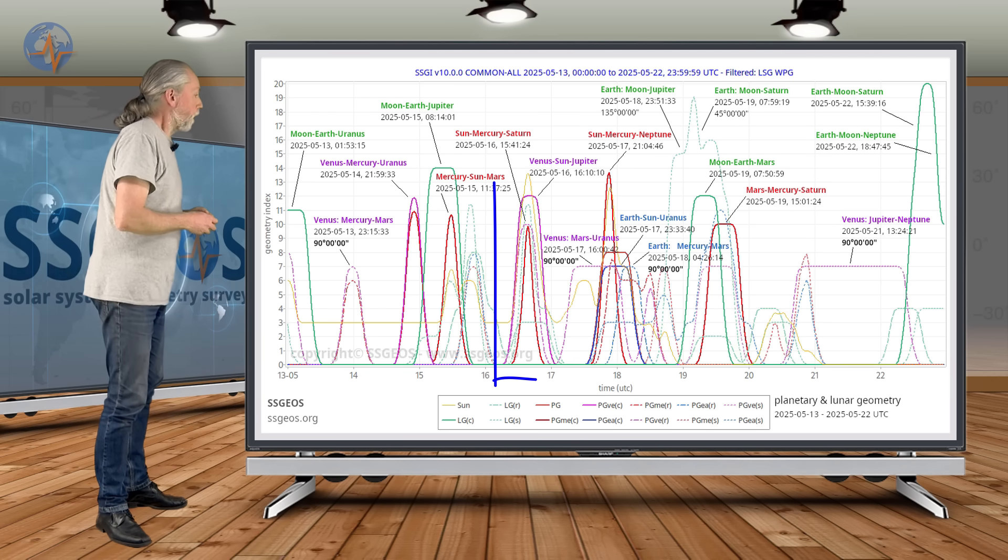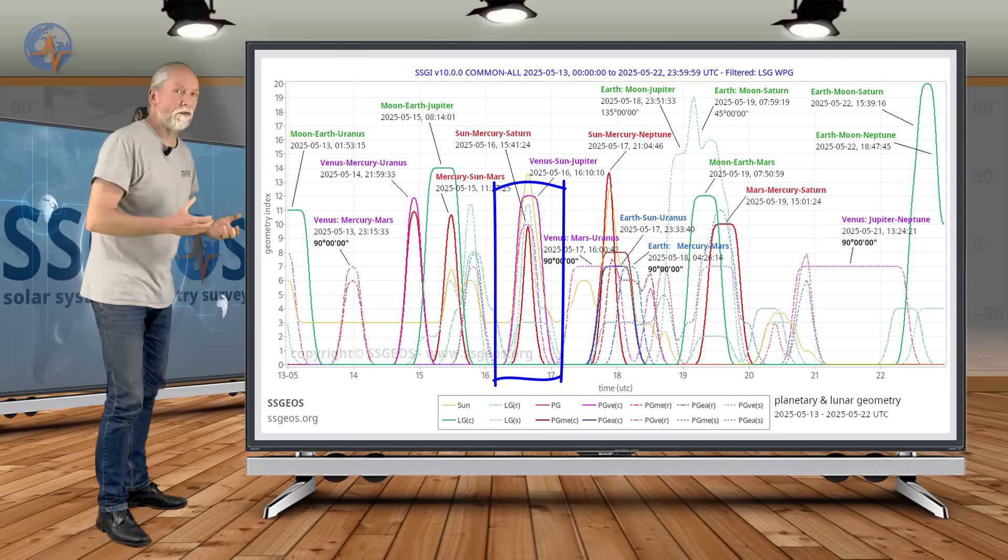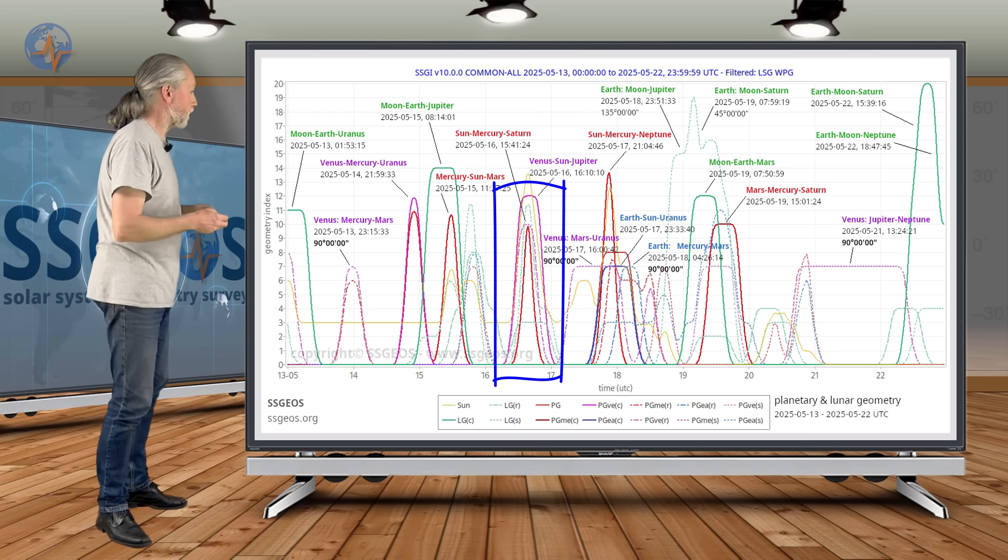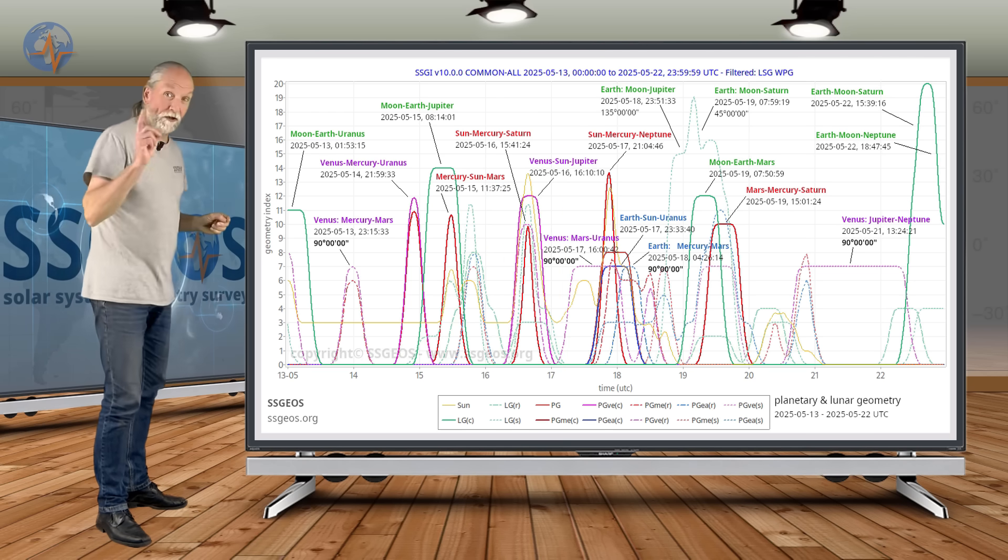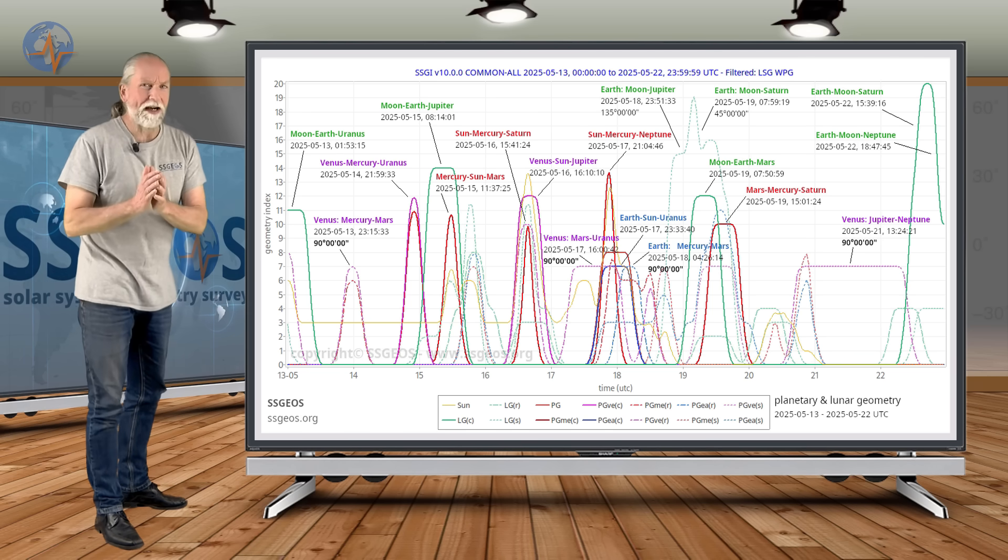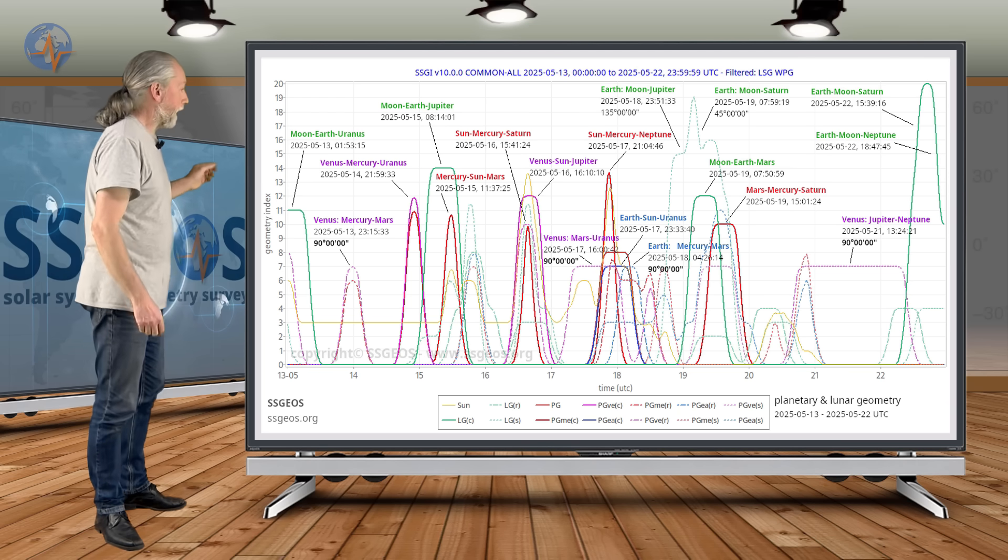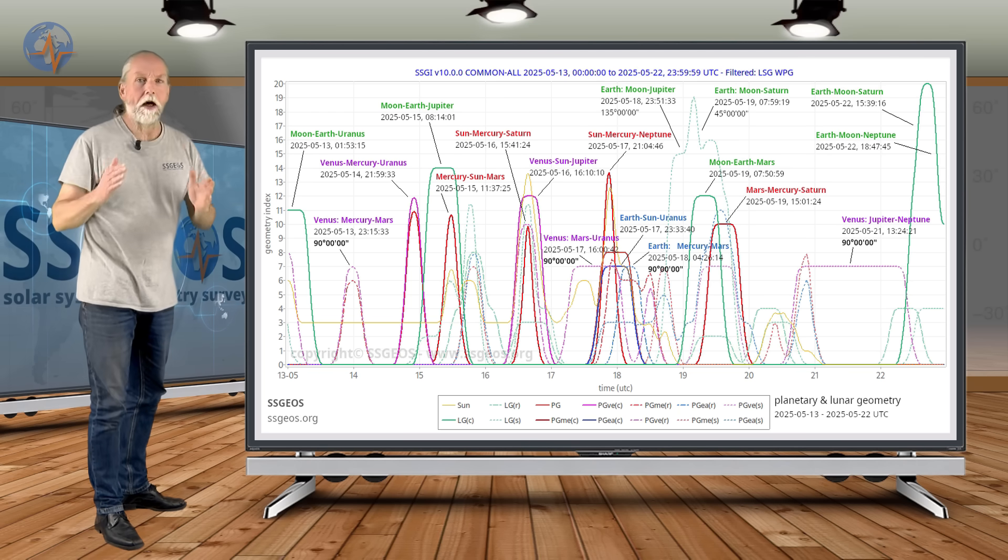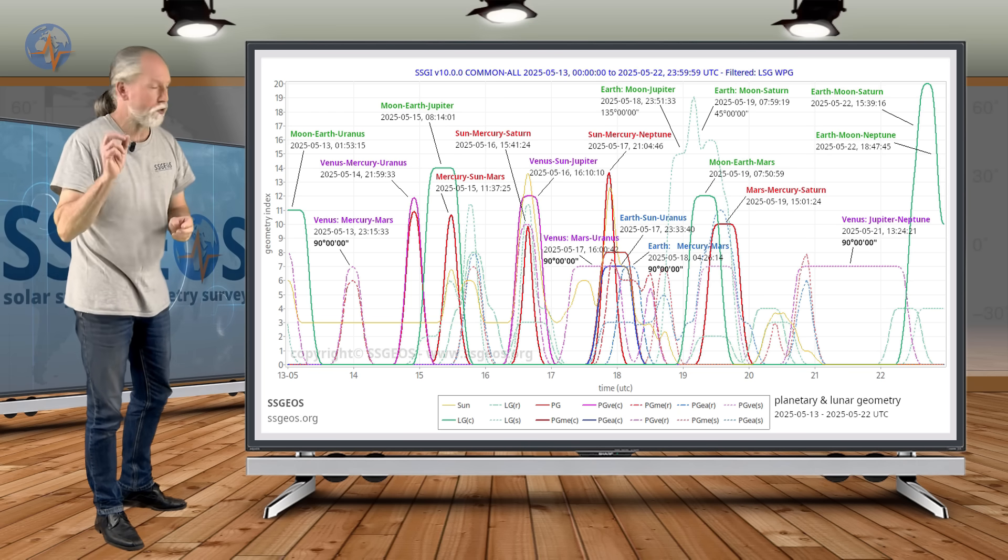Then we see a convergence on the 16th, again with Mercury and Venus in two conjunctions: Sun-Mercury-Saturn, critical one, and Venus-Sun-Jupiter. That's a really tight convergence that happens almost at the same time. The Sun is involved and that's why you see the high yellow peak as well, exceptional geometry.